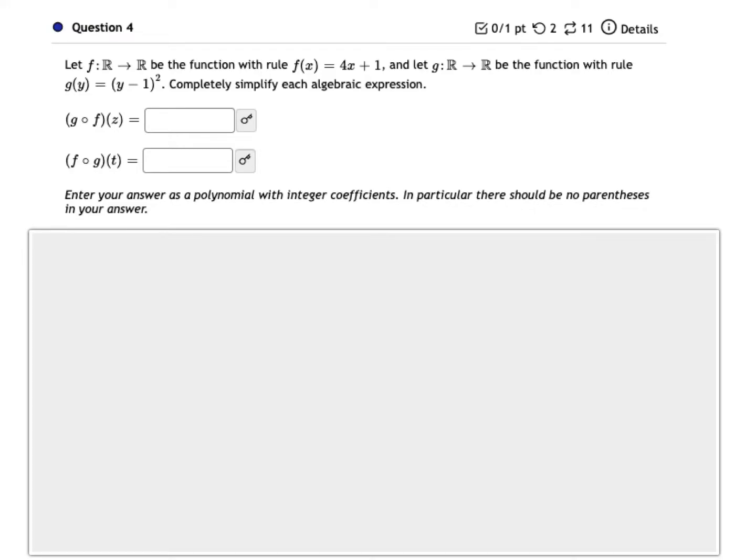In this problem, we're finding the composition of two functions, but we're leaving the answer as an algebraic expression. So the process we're using is not different than when we're just evaluating the composition at a numeric value. We just have to do a little bit of algebra as well.